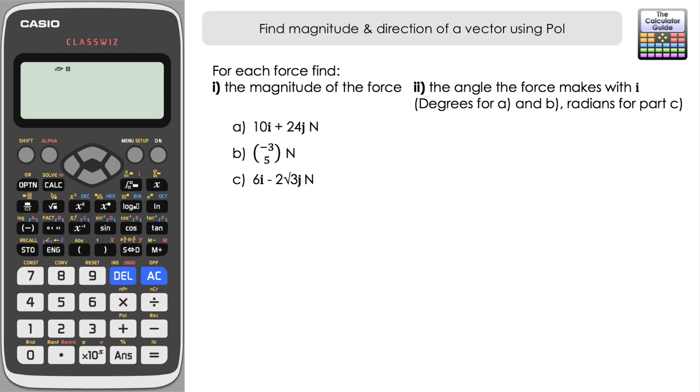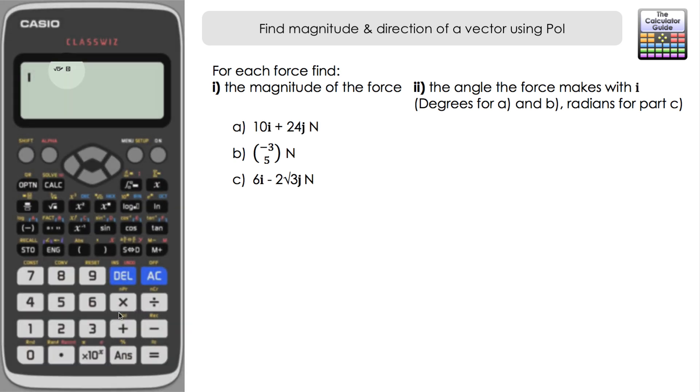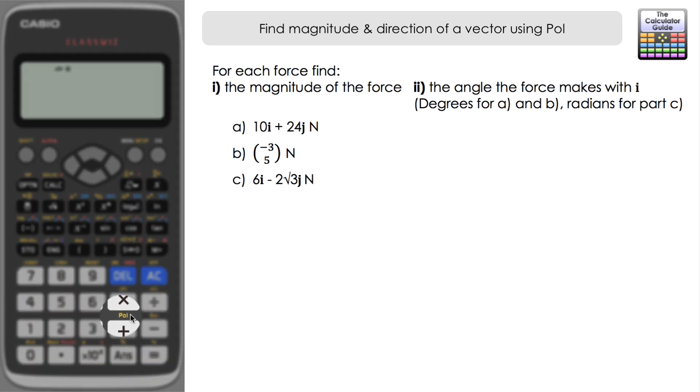We're going to get started with the first vector. Just a quick double check, the angle unit for the calculator at present is degrees. We can see that with the little D here at the top. We're going to be using the pole feature which is located above the plus sign.